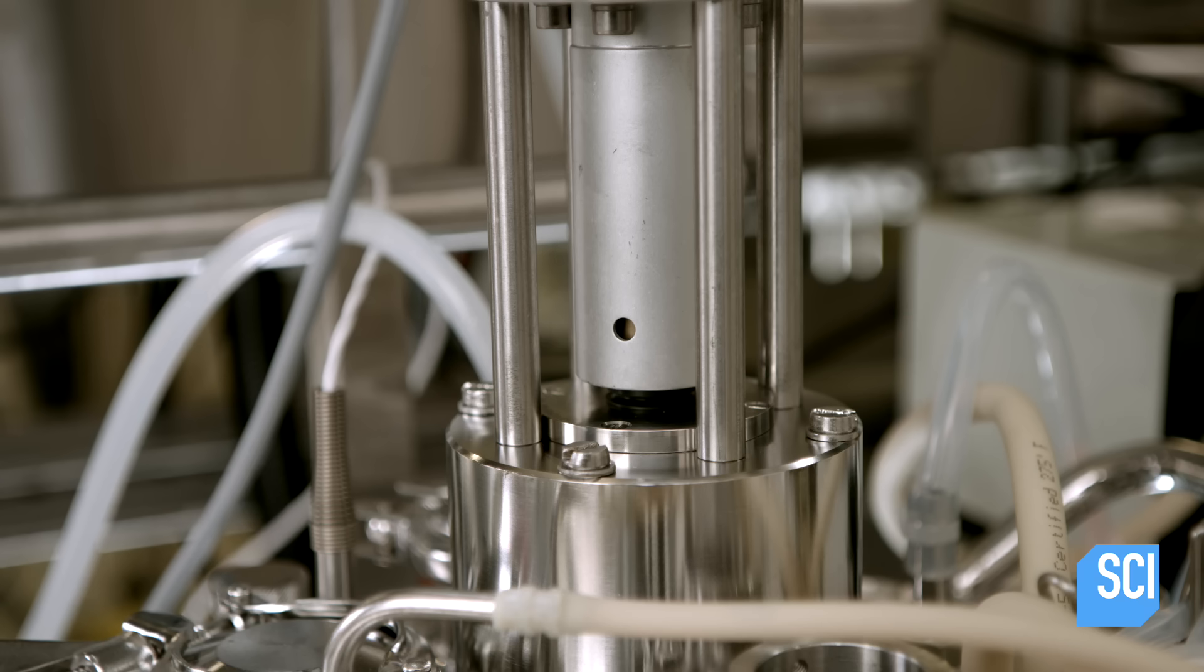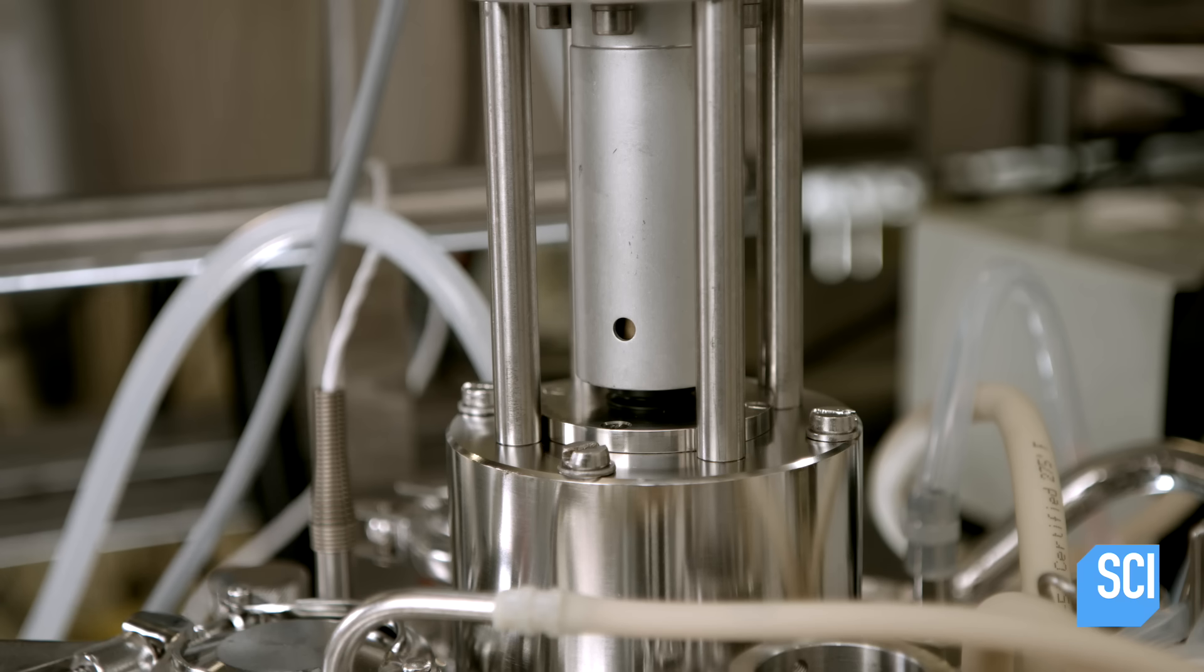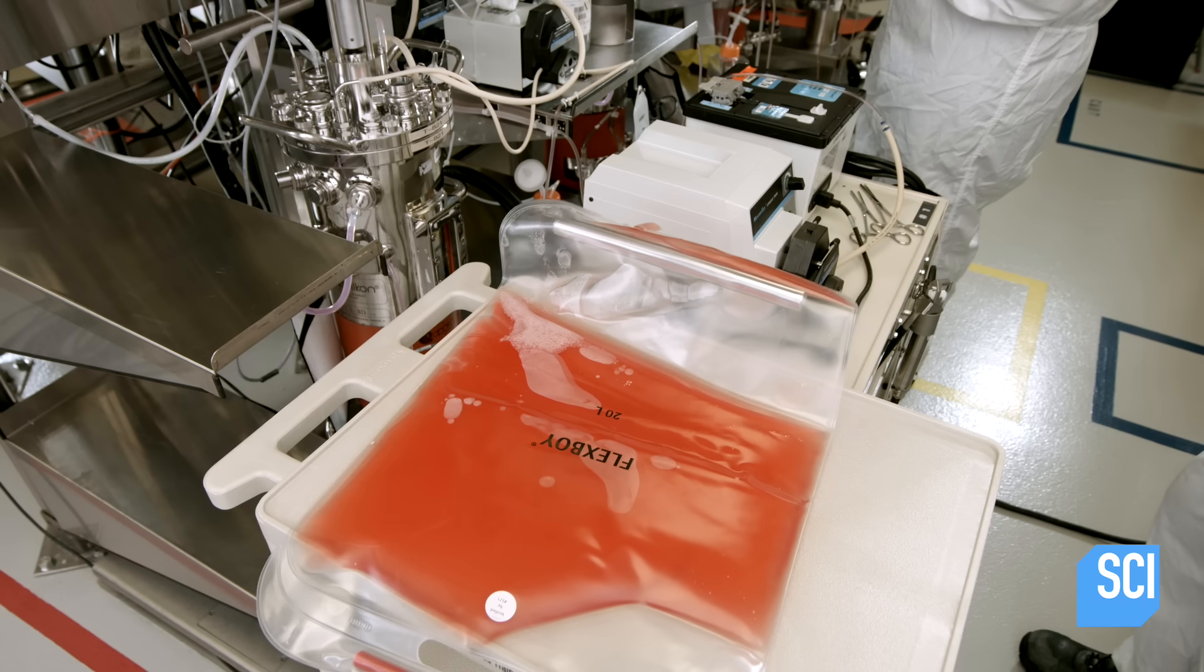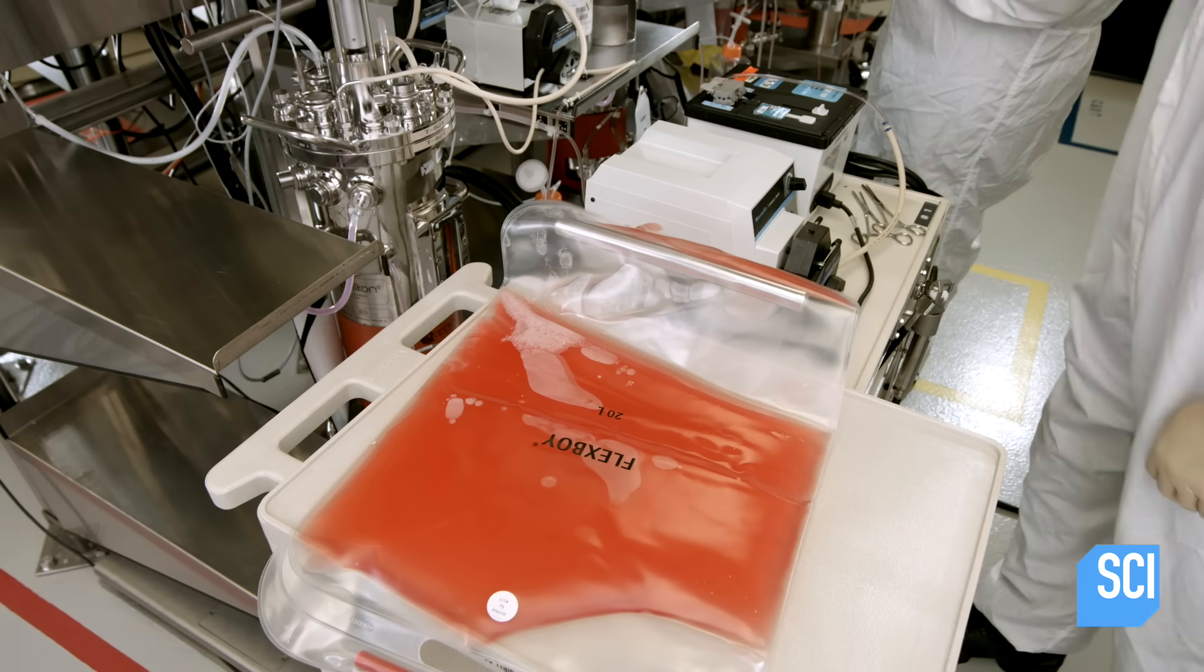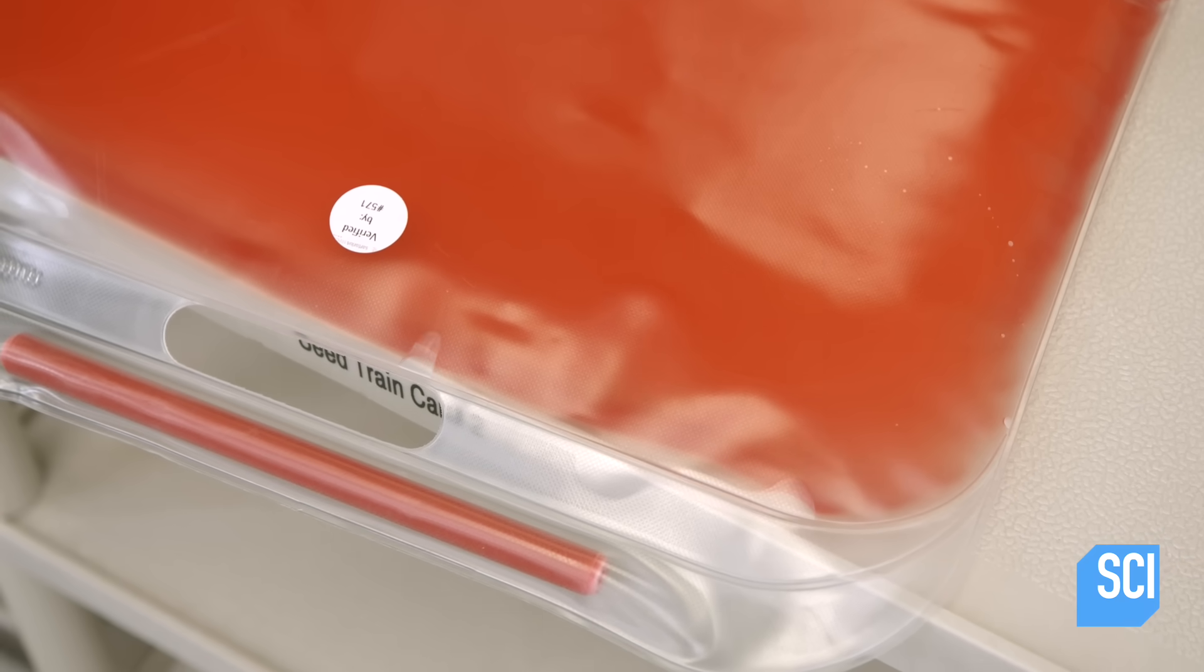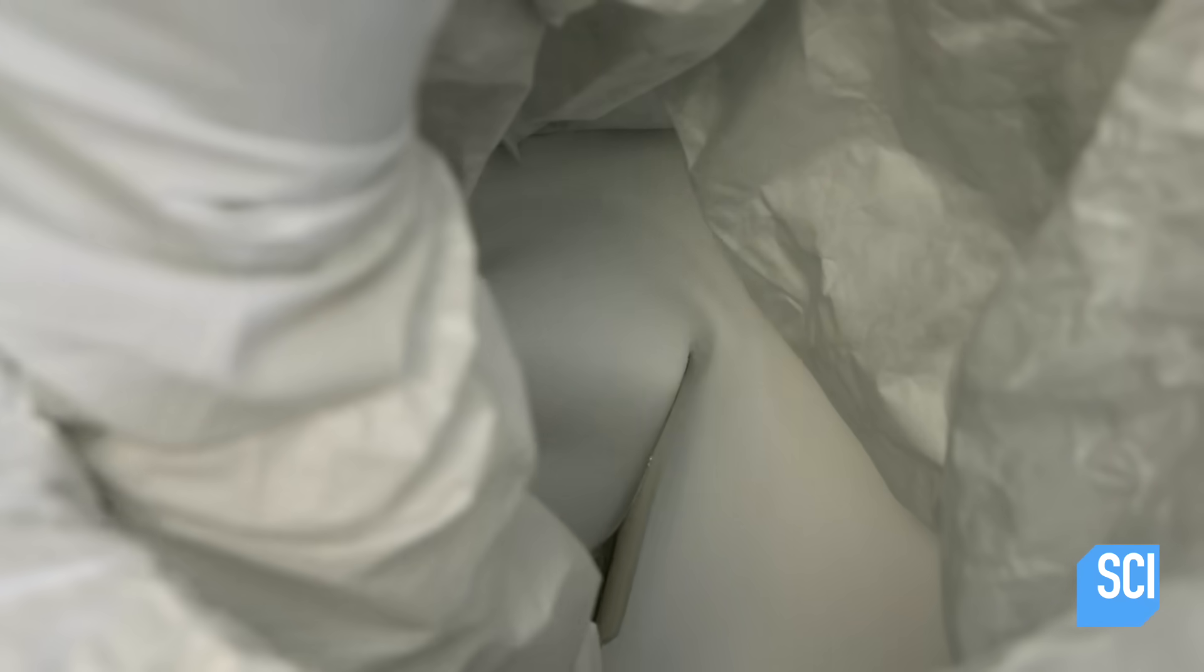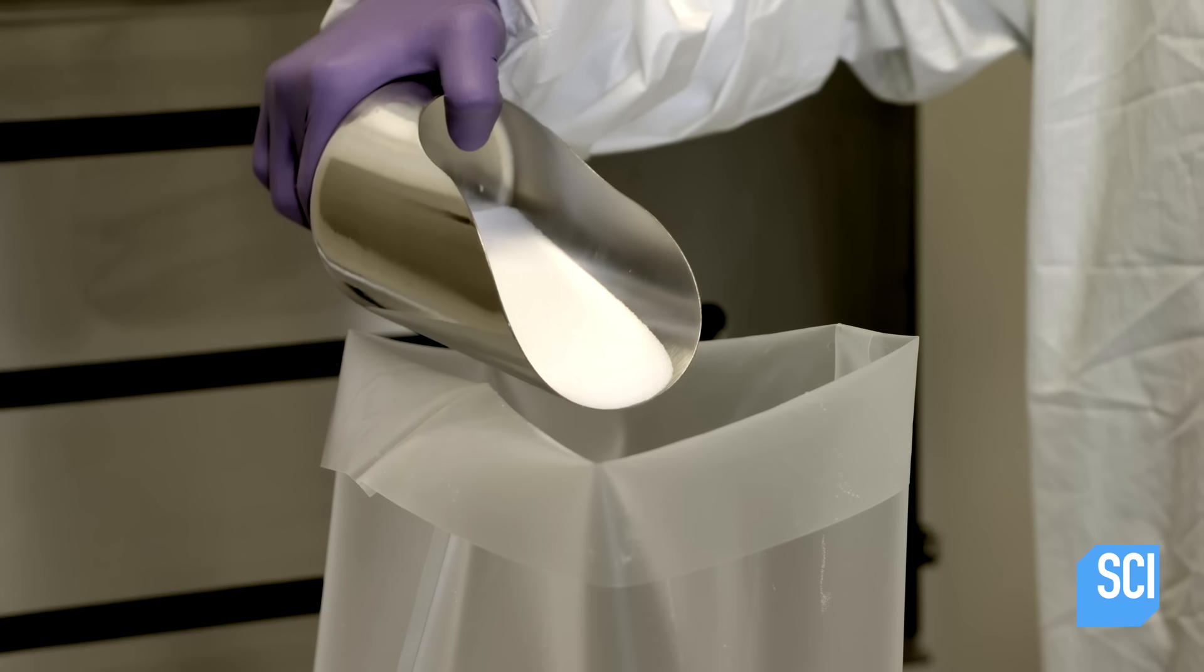Inside, a propeller agitates the mixture to stimulate growth. Over a three-week period, the number of cells increases exponentially. Each new cell is programmed to produce the target biologic protein. Next, a technician measures salts and other dry ingredients. He's preparing a recipe for purifying the protein liquid once it's been separated from the cells.